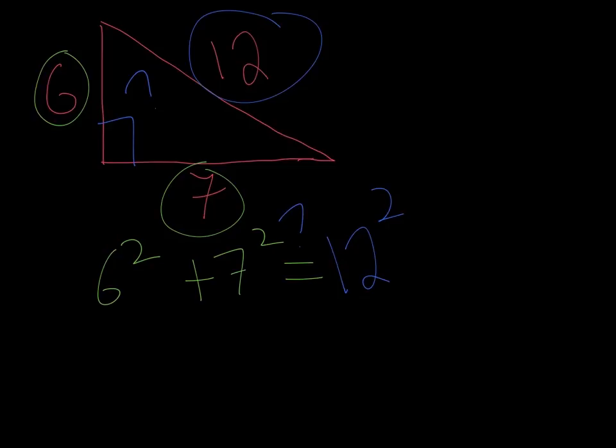If I take 6 squared I get 36, plus 49, that's going to equal 144. But we can tell right here, right now, this isn't going to work. These two numbers are way too small to equal 144 when I add them together. So this is not a right triangle.